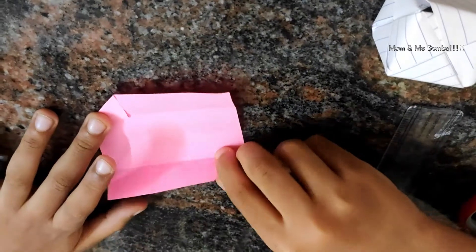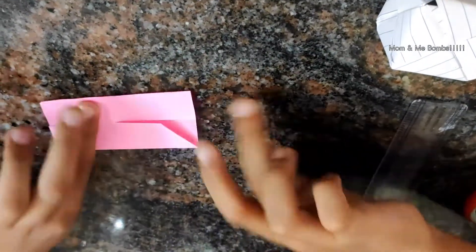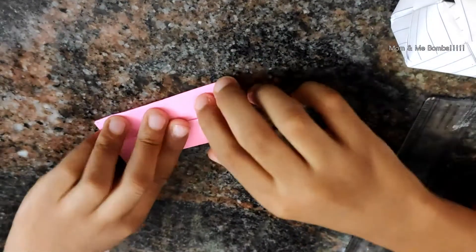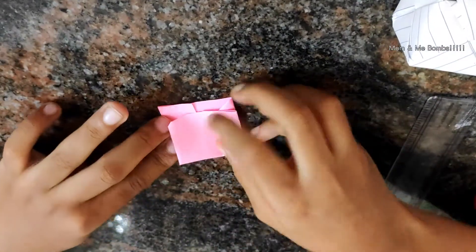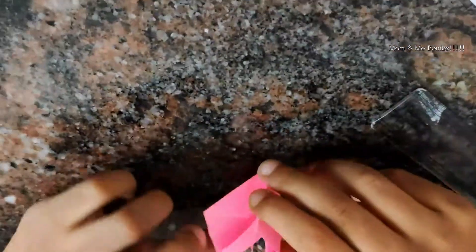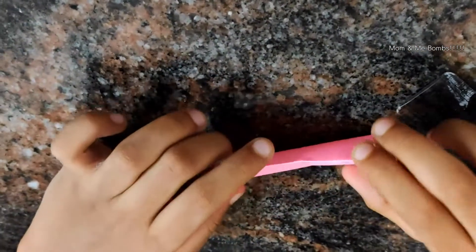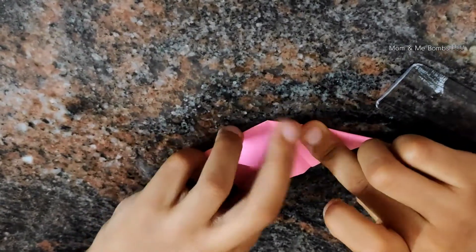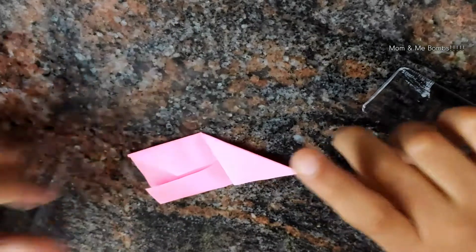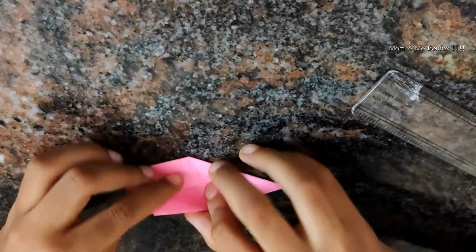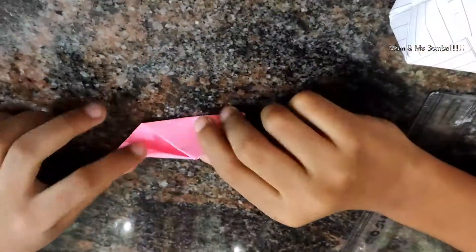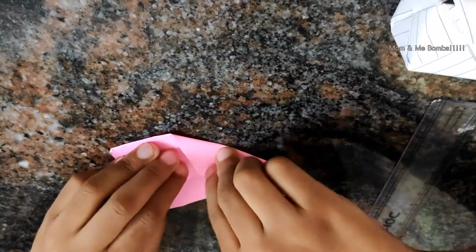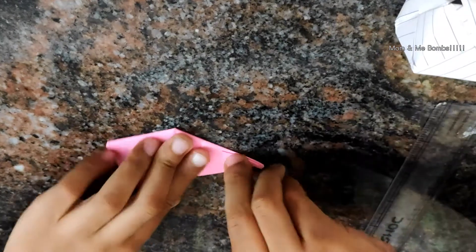Now you have to fold again like you did in the second step as you see here, and now fold it like this side. Now we have to open it back and then we have to fold it two times up and down. Now we have to open it and then open the downside and close the upside and then close the downside.